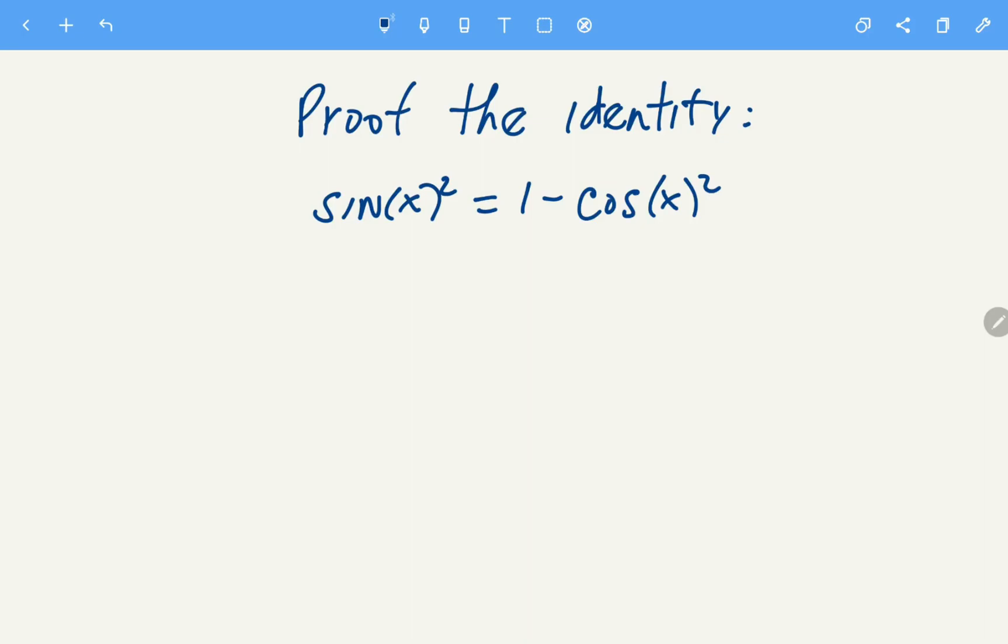All right guys, in this video we are going to prove the identity sine of x squared equals 1 minus cosine squared of x. So to prove this identity, we can start from the basic identity sine of x squared plus cosine of x squared equals 1.